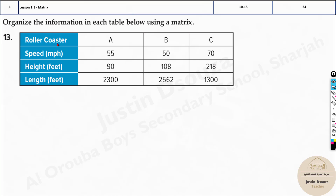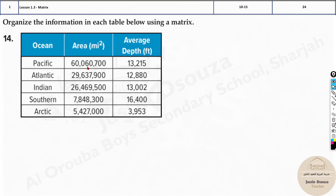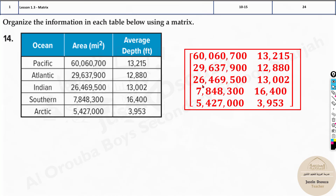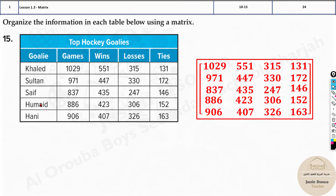Now we need to organize the information in each table below using a matrix. This is very straightforward — all you need to do is write all the numbers in matrix form. One table has five rows and two columns, and the other has five rows and four columns. You do not need to write the titles or column names — only the values are written in the matrix.